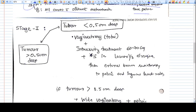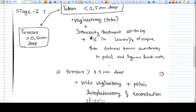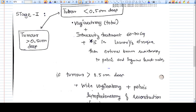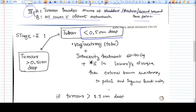In stage one, we divide the treatment by two. If the tumor is less than 0.5 centimeter deep, after full thickness biopsy you'll see whether the tumor is less than 5mm deep. Then you can do vaginectomy.